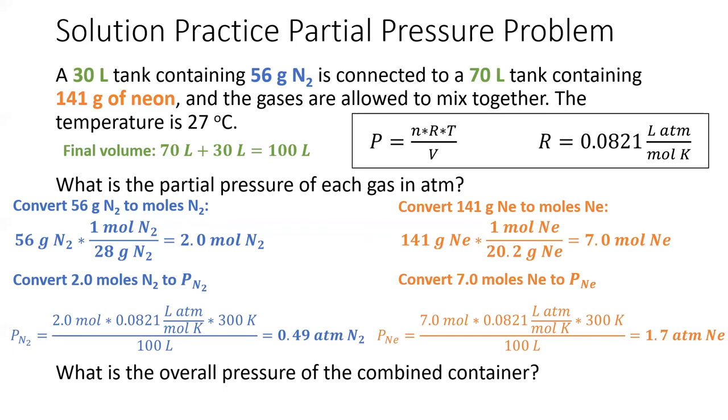Then, I combine the partial pressures together, and I get my overall total pressure, which is 2.2 atmospheres.